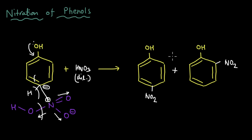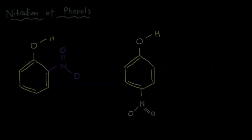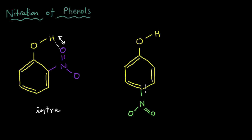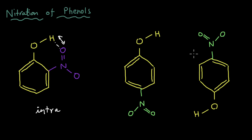Because there are two products, how do we separate them? Looking at both structures — orthonitrophenol and paranitrophenol — there are oxygens and hydrogens, so you'd expect some sort of interaction: hydrogen bonding. For the ortho product, there is a hydrogen here and an oxygen here, and there will be hydrogen bonding between these two within the same molecule — this is called intramolecular hydrogen bonding. For the para product, there will be intermolecular hydrogen bonding. Placing another para molecule beside it (flipped around), you can see: there is a hydrogen here and an oxygen here, forming hydrogen bonding between the two molecules.